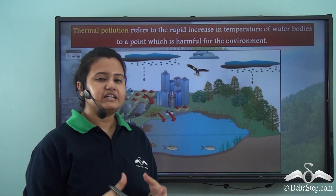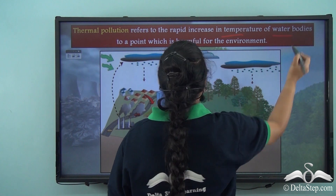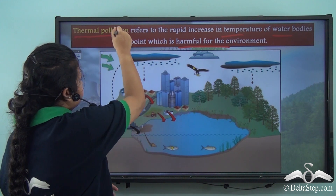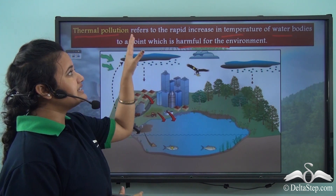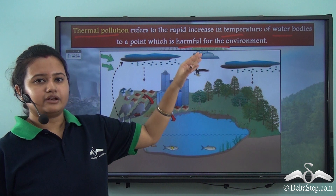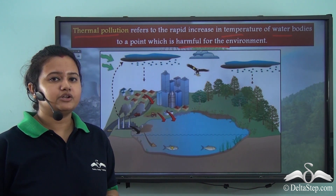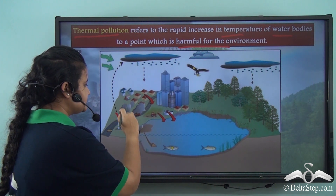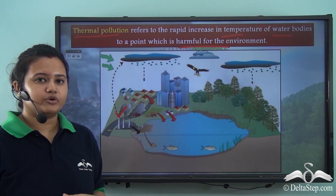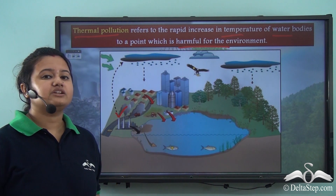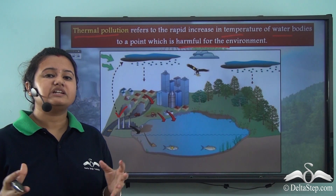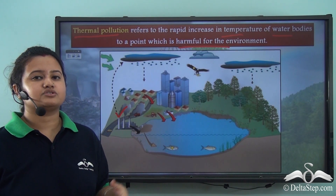This sudden and rapid increase in the temperature of water bodies, which is harmful for the environment, is known as thermal pollution. Thermal pollution refers to the sudden and rapid increase in the temperature of water bodies that is harmful for the environment. A major source of thermal pollution is industries — the overheated water released from industries leads to rapid temperature increase and affects marine life.